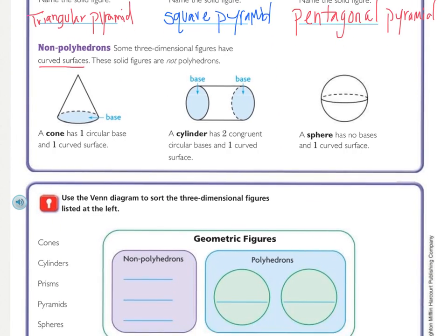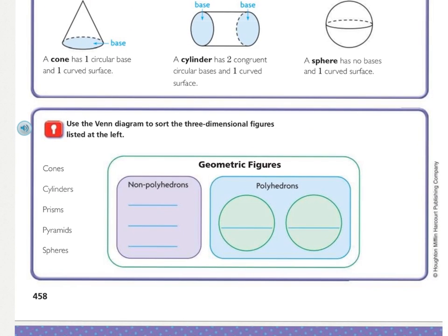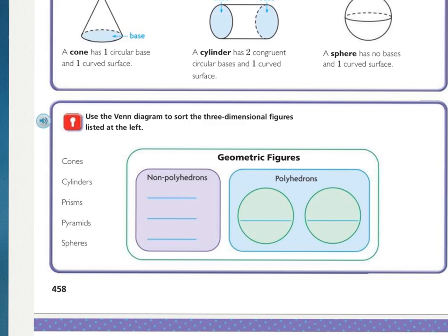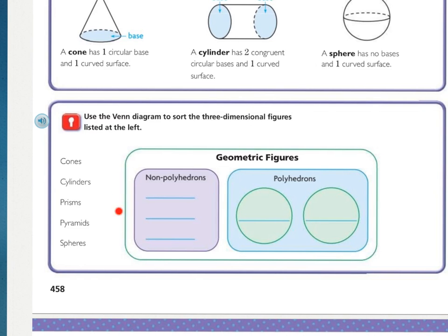Let's move on to the Venn diagram so that we can classify and sort our figures. We're going to use the Venn diagram. In this case, it's not two overlapping circles. This is geometric figures. There's non-polyhedrons. This rectangle is polyhedrons. And then what is considered a polyhedron but also has another special name inside of that. See if you can take these vocabulary words that we just talked about and see if you can place them where they go.